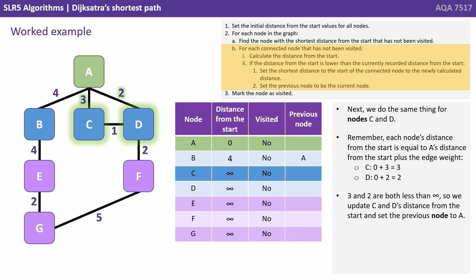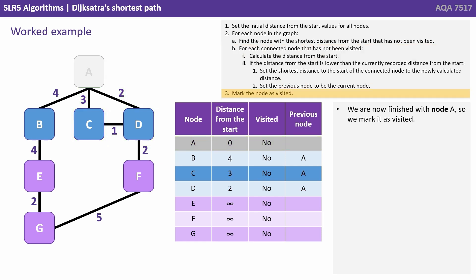Next we do the same thing for nodes C and D. Each node's distance from the start equals A's distance plus the edge weight: 0 plus 3 is 3 for C, and 0 plus 2 is 2 for D. Since 3 and 2 are both less than infinity, we update C and D's distance from the start and set the previous node to A. We're now finished with node A, so we mark it as visited.